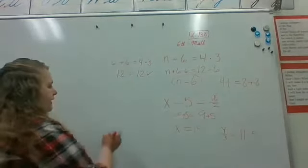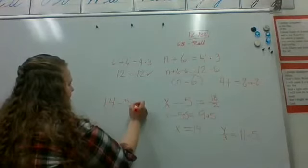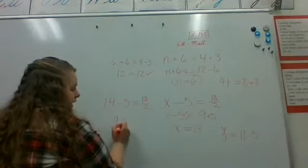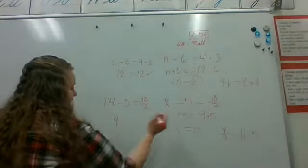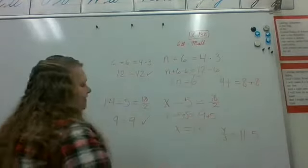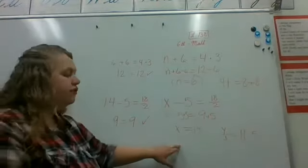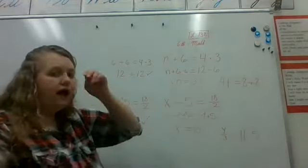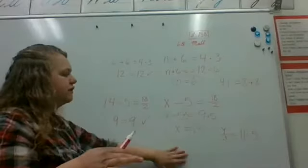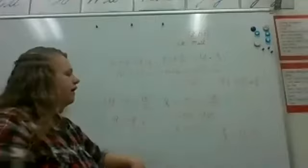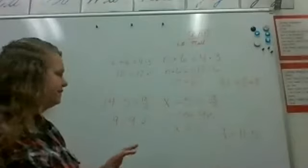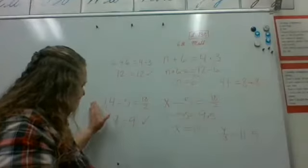Now we plug it in: 14 minus five equals 18 over two. 14 minus five is 9, and 18 divided by two is also 9 — those are equal, so we put our check mark. X equals 14 is our answer. When you get your answer, I want you to circle it — that will help you see it, help me see it, and help your parents see it among all the numbers. The check mark just shows that you checked it.